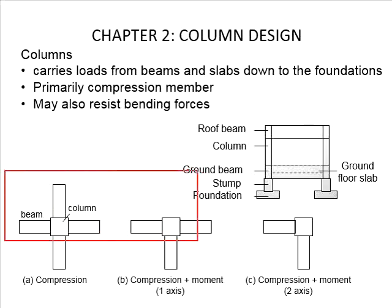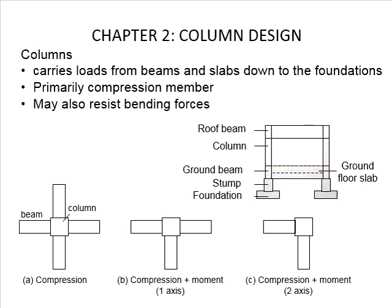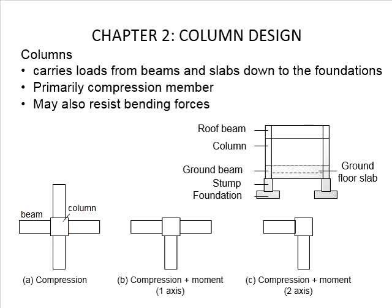Depending on the layout of the structures, a column may also undergo bending forces. Taking this as an example, there are beams at four faces of the column. Assuming the beams have identical effective length with the same magnitude of loading, this column will undergo pure compression. The fixed-end moments generated by the beams at the ends of the column will cancel out each other.